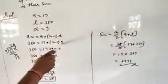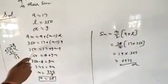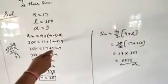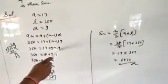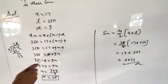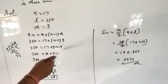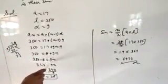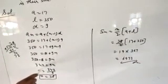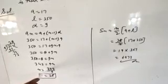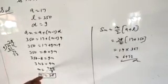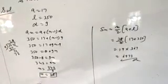350 equal to 17 plus 9 multiply by N minus 1, then 9N minus 9. 350 equal to 17 minus 9 equal to 8 plus 9N. 350 minus 8 equal to 9N. 342 equal to 9N. N equal to 342 upon 9. 9 divided by 342 equal to 38. Then N equal to 38.